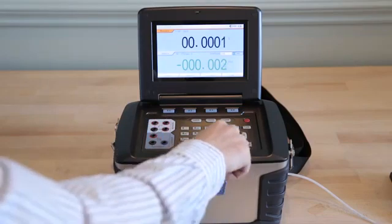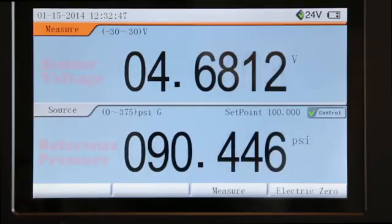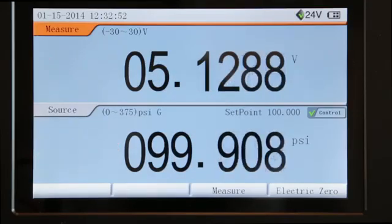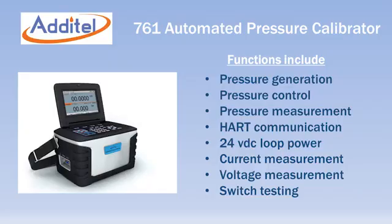The 761 also includes HART communication capability, 24 volt DC loop power, and can read the current or voltage produced by pressure transducers and transmitters. For pressure switch testing, the 761 can sense and document the trip and reset points for the switch.